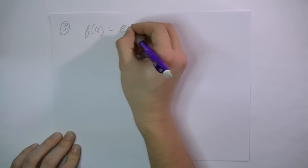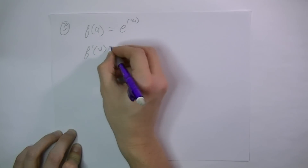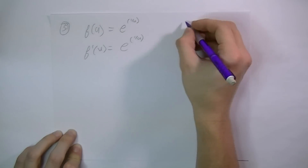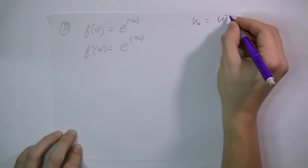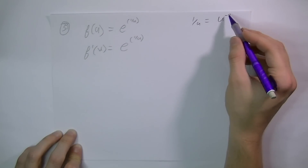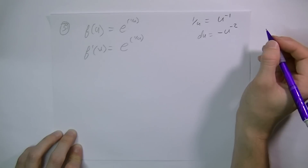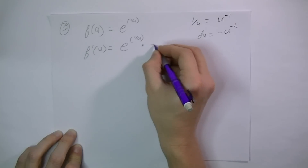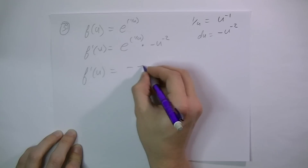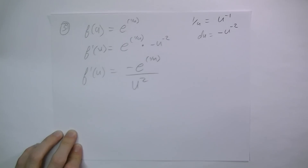Number 39. f of u equals e to the 1 over u power. So f prime of u — we'll have to do the chain rule here. This part stays the same. I'll note that 1 over u is equal to u to the negative 1 power. So I need to take the derivative of the inside, which would be negative u to the negative 2 power. The negative will come out in front, and u to the negative 2 will go to the denominator with the exponent becoming positive.